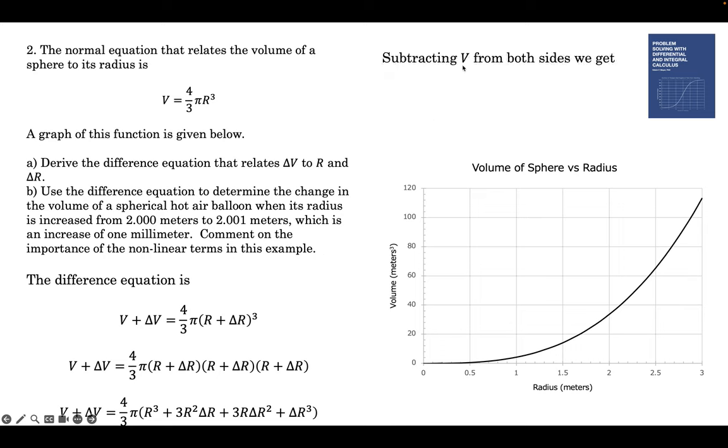We can simplify it, subtract V from both sides, and we get delta V. And that is the right answer. That's part A. That's the exact expression for delta V. We can now tackle part B.